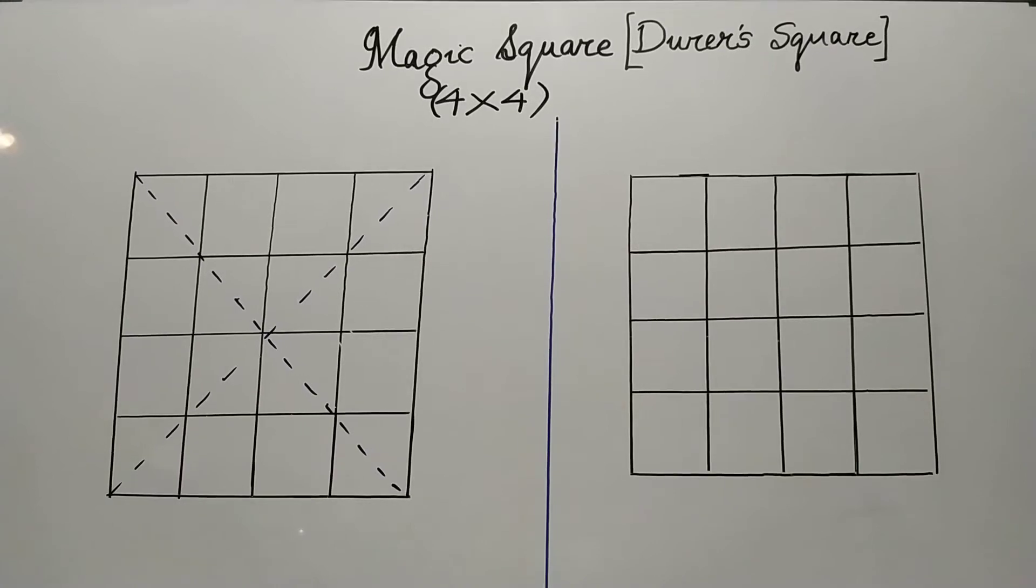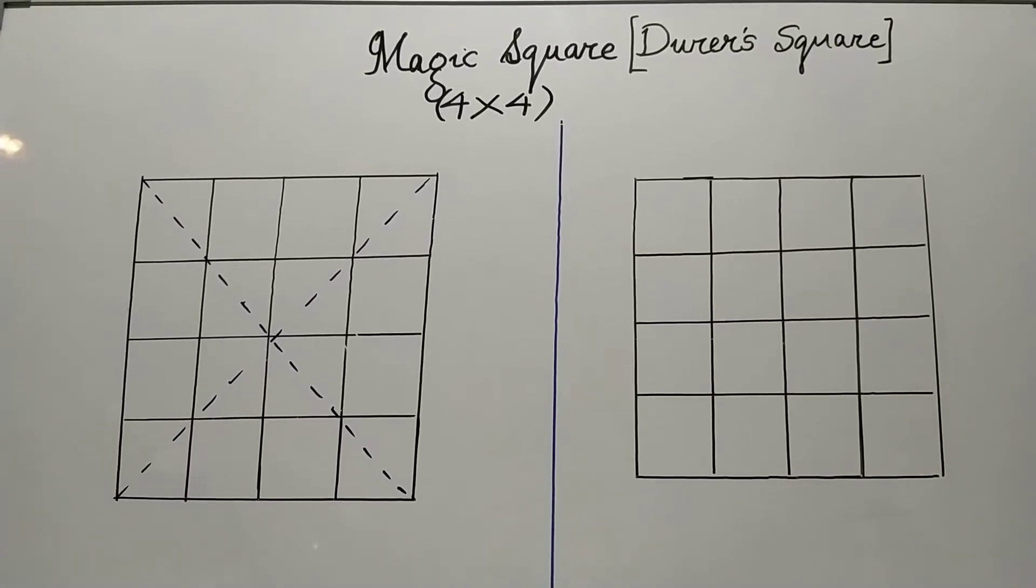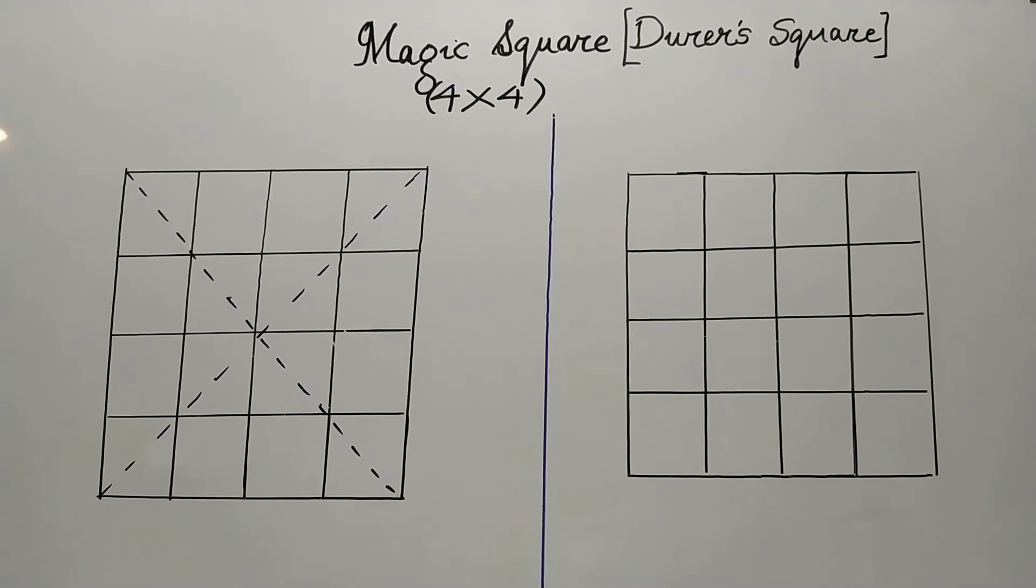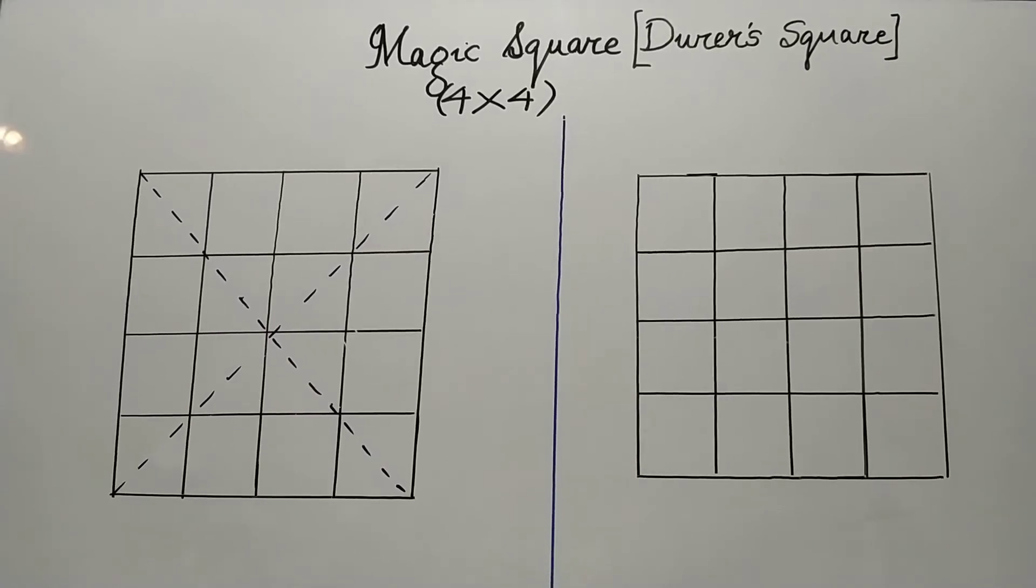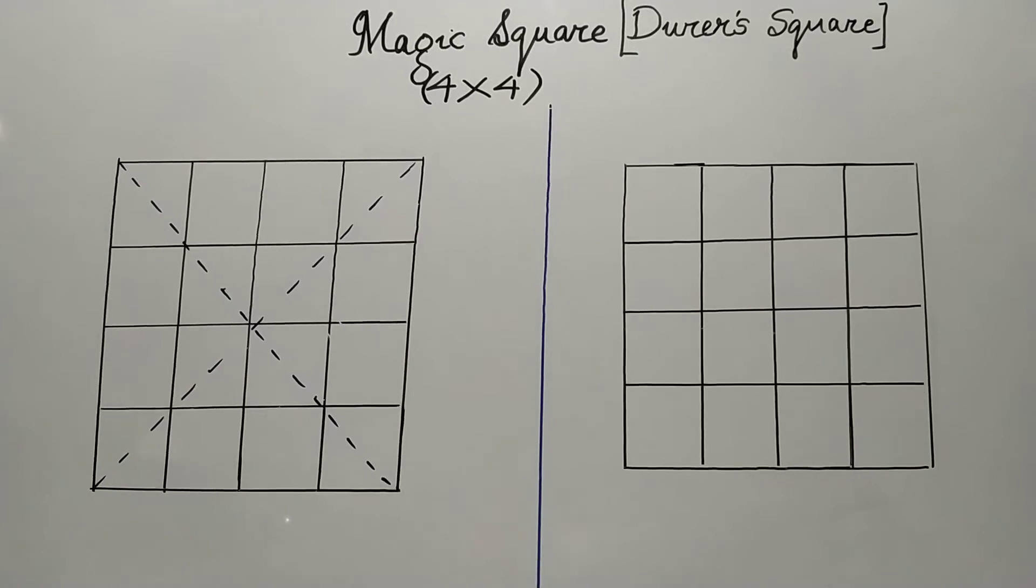In this magic square, we will have 4 rows and 4 columns. So totally, we will have 16 grids.